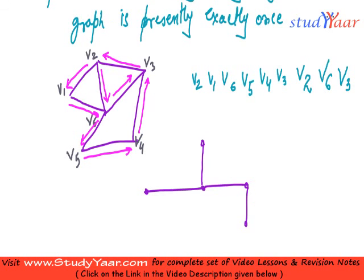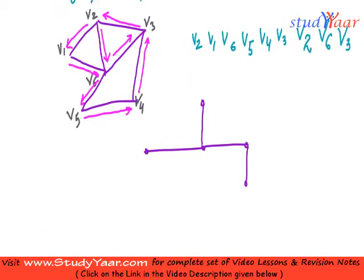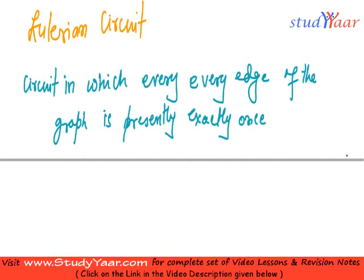Now, similar to the concept of Eulerian path, we have something called a Eulerian circuit. So what is a Eulerian circuit? It is a circuit in which every edge of the graph is present exactly once.